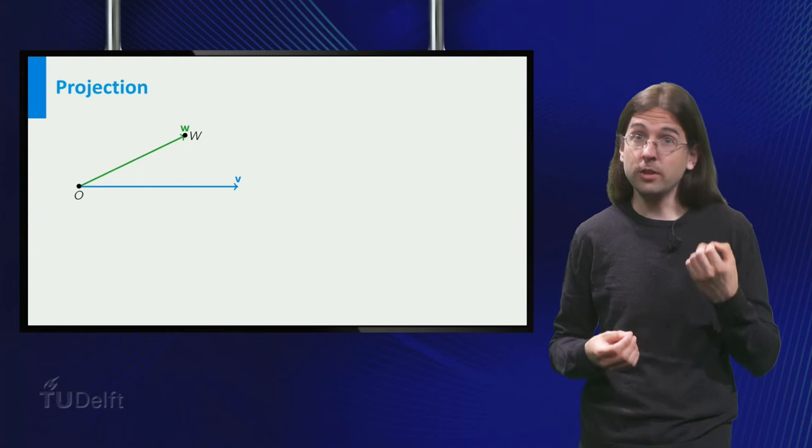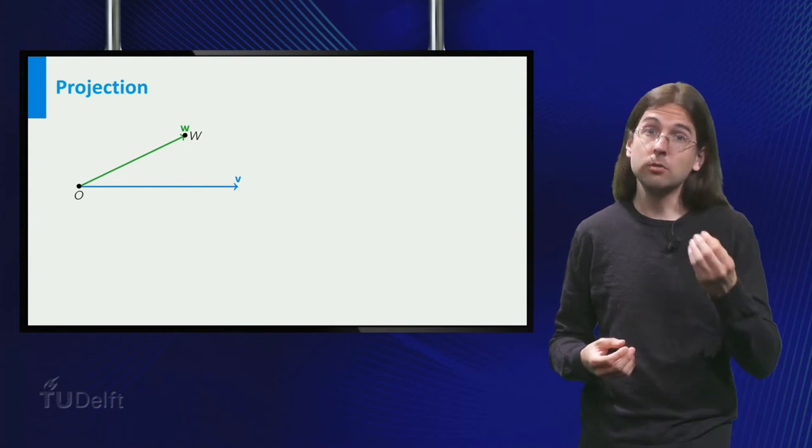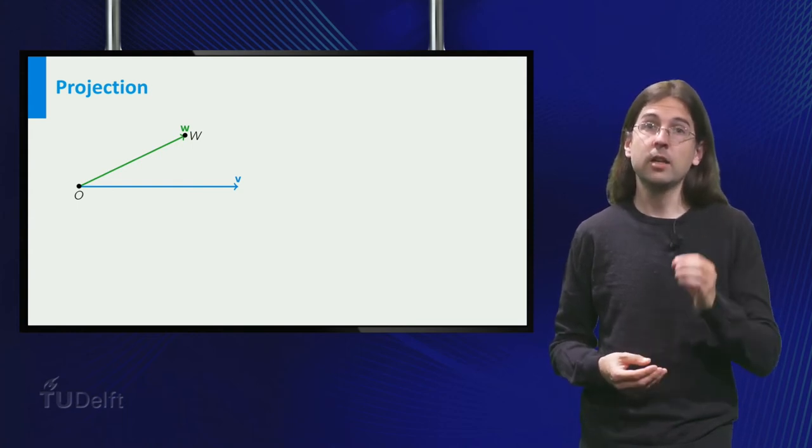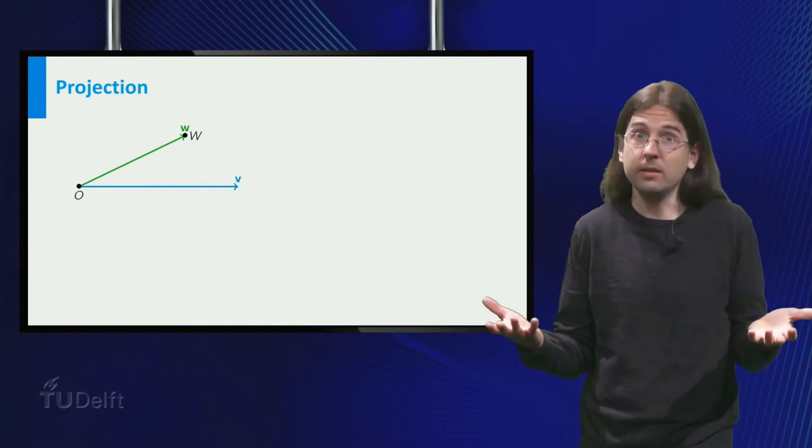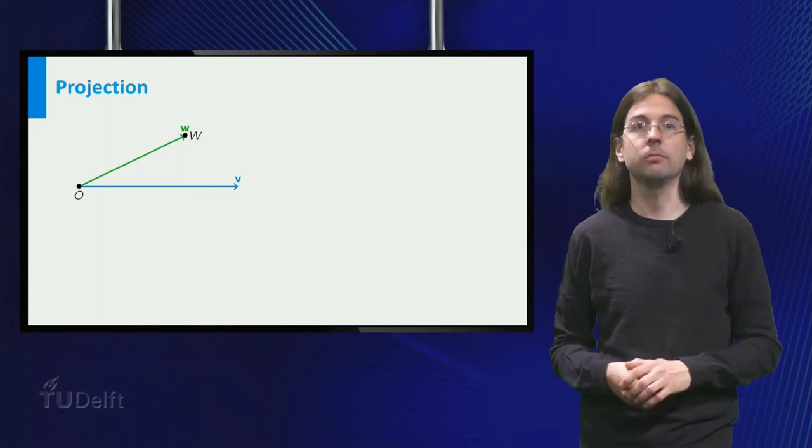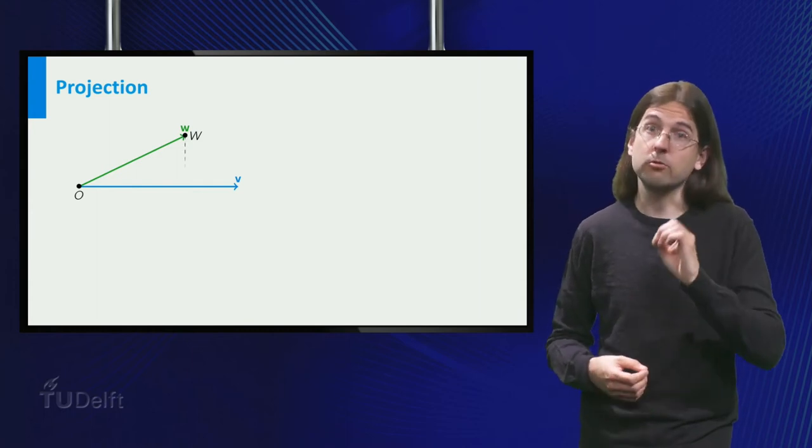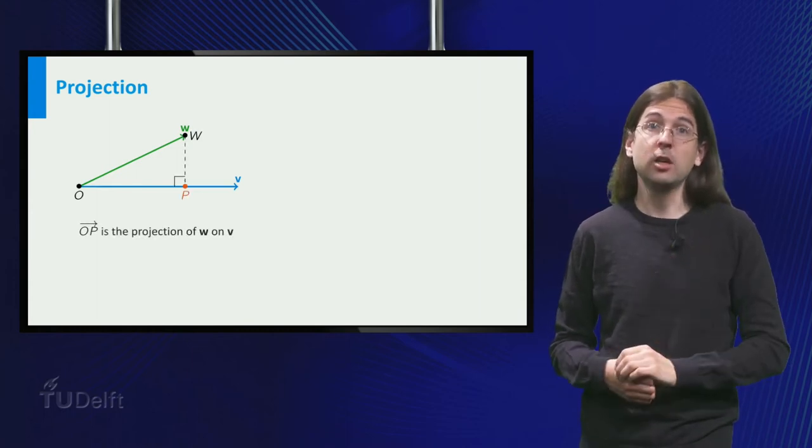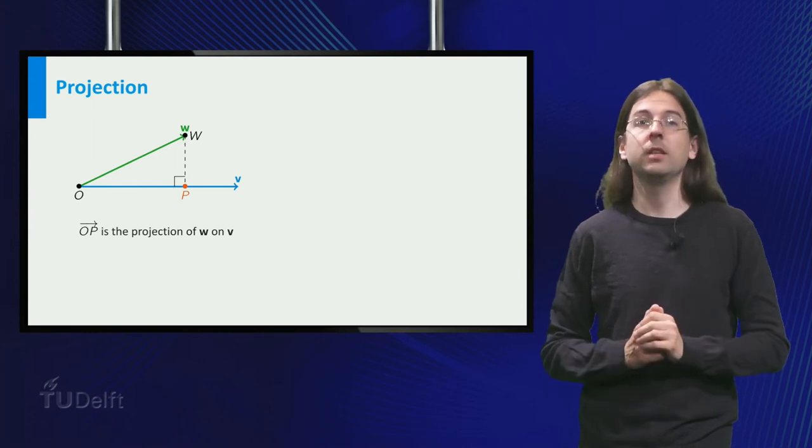Now consider two vectors. To use the definition of the cosine, we need to somehow find a right angle triangle, which contains the angle between v and w. Let us create it by drawing the line perpendicular to the vector v from w.